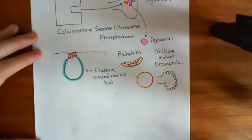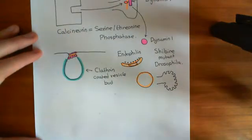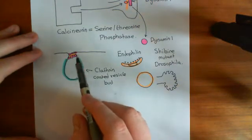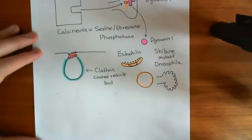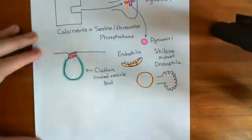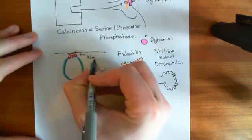Welcome back to this next video in which we are discussing clathrin-mediated endocytosis and the endocytic pathway. We've discussed how, in order to pinch the clathrin-coated vesicle bud away from the plasma membrane, we assemble dynamin-1 protein in a spiral around the neck of the clathrin-coated vesicle bud, and also make rings of endophyllin protein that wrap around that neck as well.